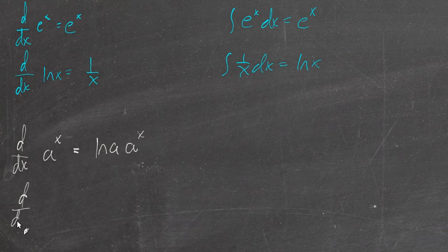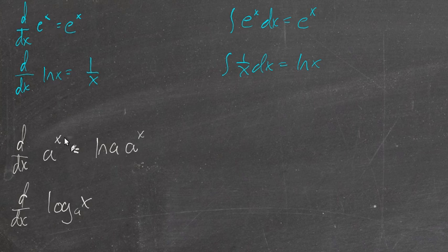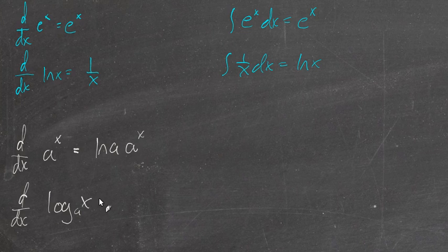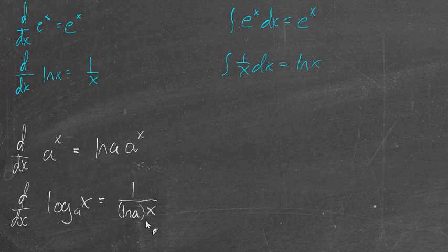The derivative of log base a of x, which these two are inverse functions, just like e to the x and natural log of x are inverse functions. This derivative would be 1 over the natural log of a, and down here with the natural log of a times x.